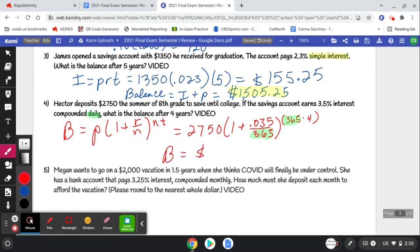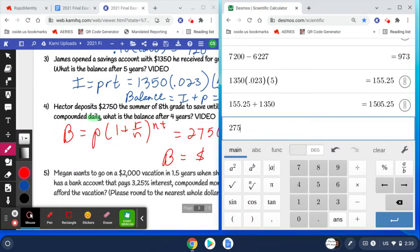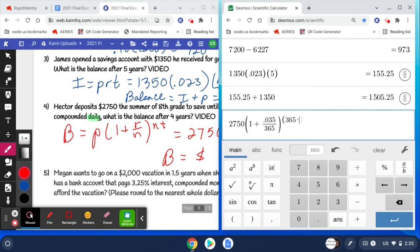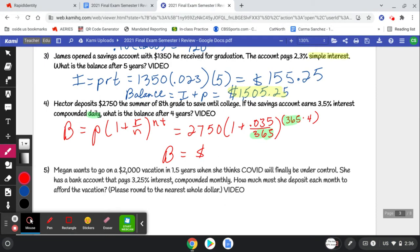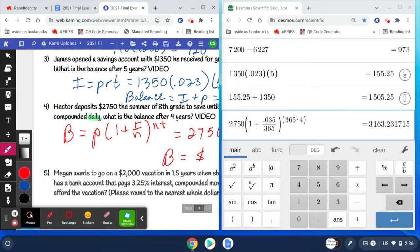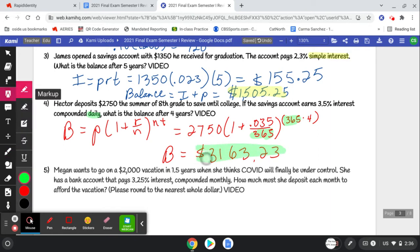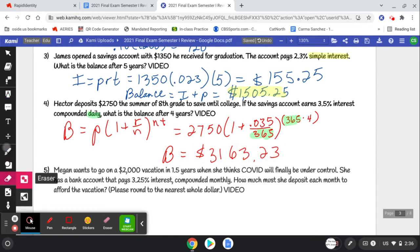So we now have this new variable N because of the compounding. So my balance is equal to, let's go plug this into Desmos. 2750 times 1 plus 0.035 divided by 365 to the power. Let's double check all our plugins: 0.035, 365, and four. So we're going to have a balance of $3163.23. Is this coming back to you from the banking unit?